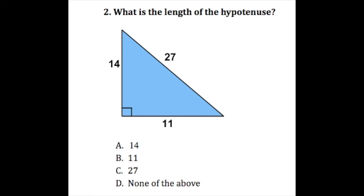On to the second example problem — go ahead and pause the video to try it on your own first. Here we're asked to find the length of the hypotenuse. Remember that the hypotenuse is the longest side of the triangle and the side directly across from the 90-degree angle. Visually we can see that's the longest side, and the 90-degree angle is right here. Across from it, the side has a length of 27. So the answer C is going to be correct.